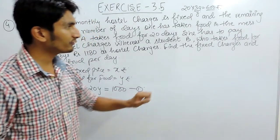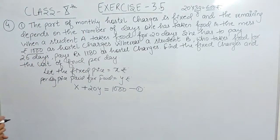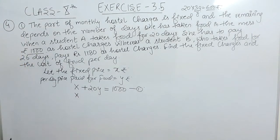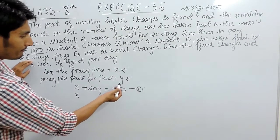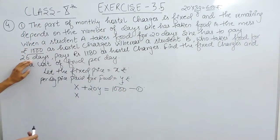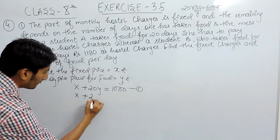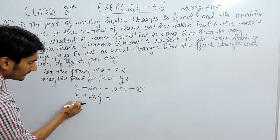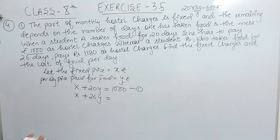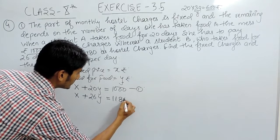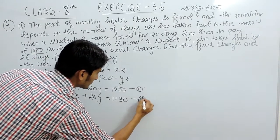For the second student who takes food for 26 days, the fixed price remains the same. The daily price is still Y, but this student has taken food for 26 days, so the total food amount is 26Y. Therefore, the fixed price plus 26Y equals Rs. 1180. This is our second equation.